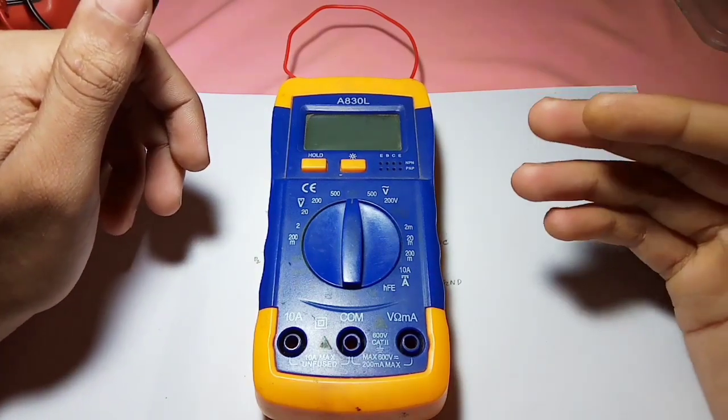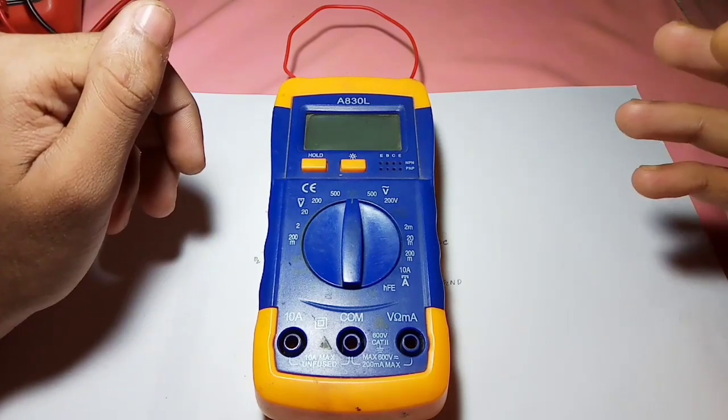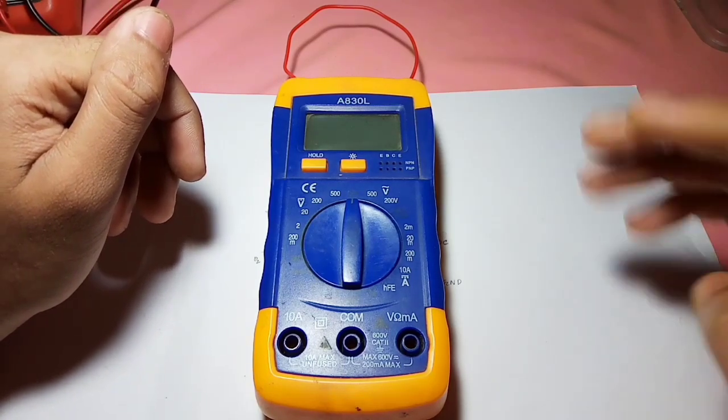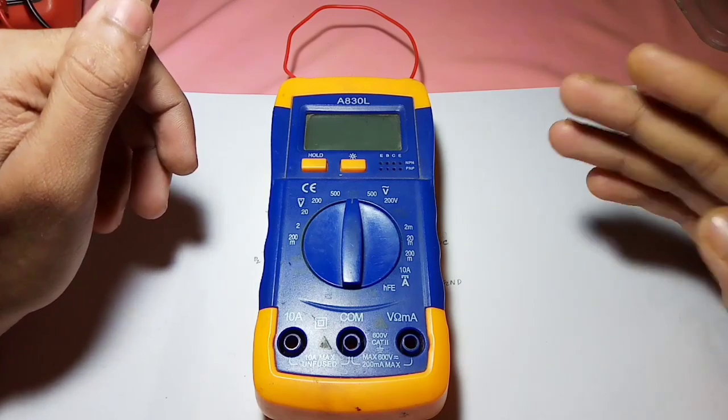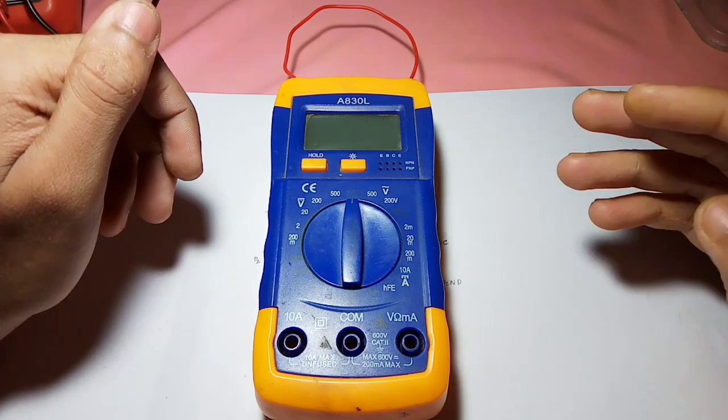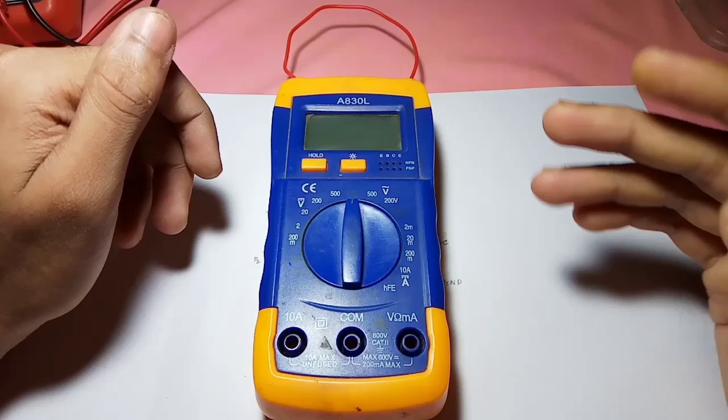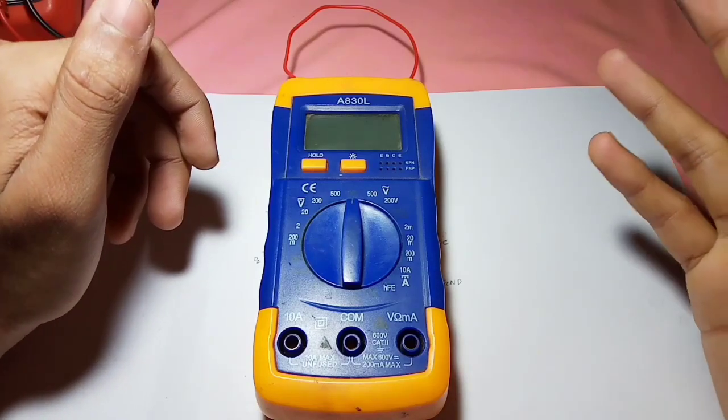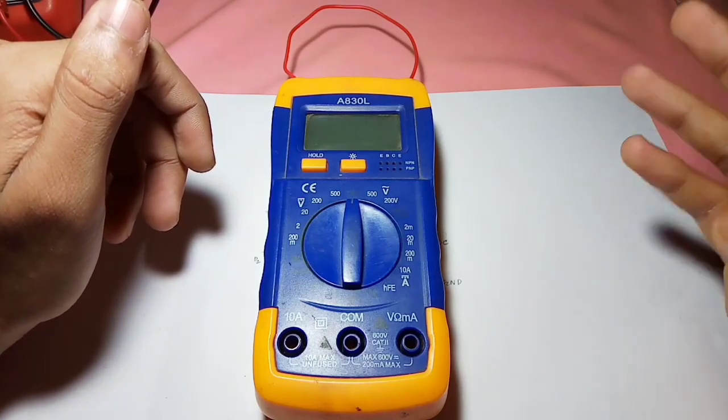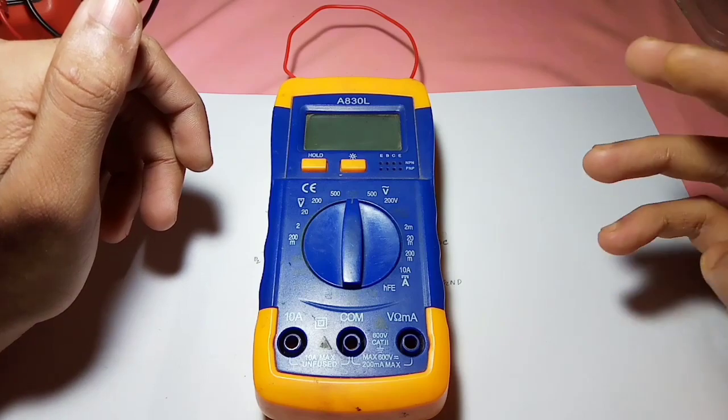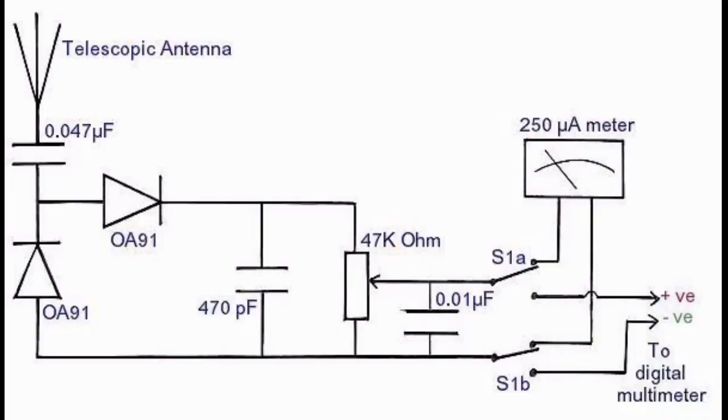So I searched online again to use my multimeter as a radio detector. I found some diagrams of a radio detector which uses a multimeter as a display. This is the circuit diagram of that circuit that I have used in my multimeter. I only removed these components from the circuit.